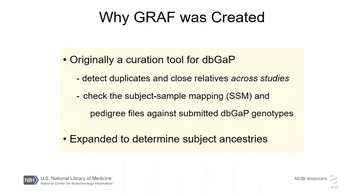So why was graph created? There are two main components, but the original one is essentially created to help deal with the dbGaP data — dbGaP is a huge database with hundreds of studies incorporating well over a million individuals. As you know, most GWAS, genome-wide association type studies, make the assumption that the individuals in the study are not closely related. So one function of graph is to act as a curation tool to pick out duplicates and very close relatives, identify those, and deal with them as you see fit for your analyses.